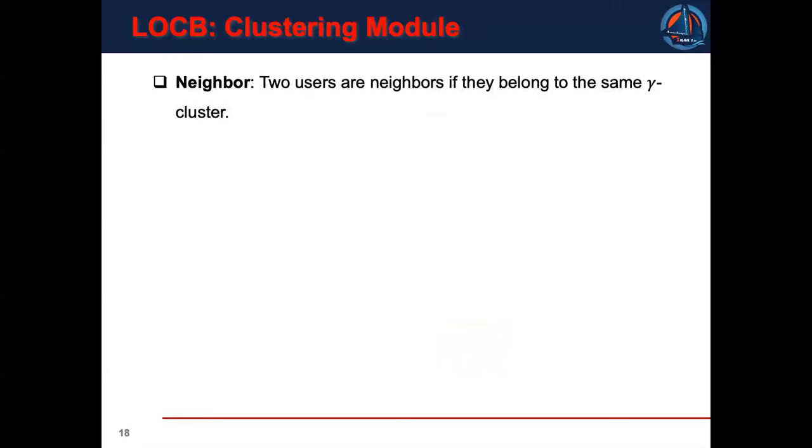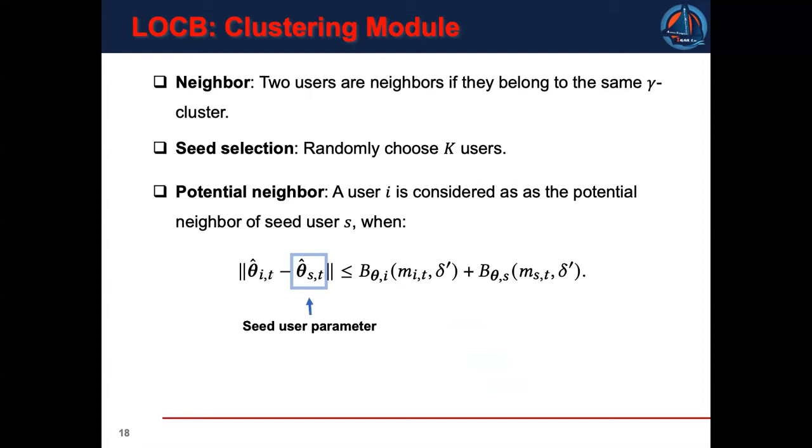To cluster users, we need to define the neighborhood among users. In this paper, we consider two users as neighbors if they belong to the same gamma cluster. However, we do not know the neighborhood for any two users. Therefore, we introduce another definition. We consider a user as the potential neighbor of a seed user when their confidence intervals overlap. Thus, in a round, a cluster is formed by a seed user and its potential neighbors.